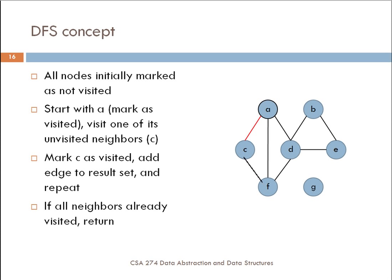The concept behind the DFS search or depth-first search is that you want to be able to traverse as deeply as possible down a path until you find all the nodes. With depth-first search, initially, all the nodes are marked as not visited. You start with marking a node as visited and then visit one of its unvisited neighbors.